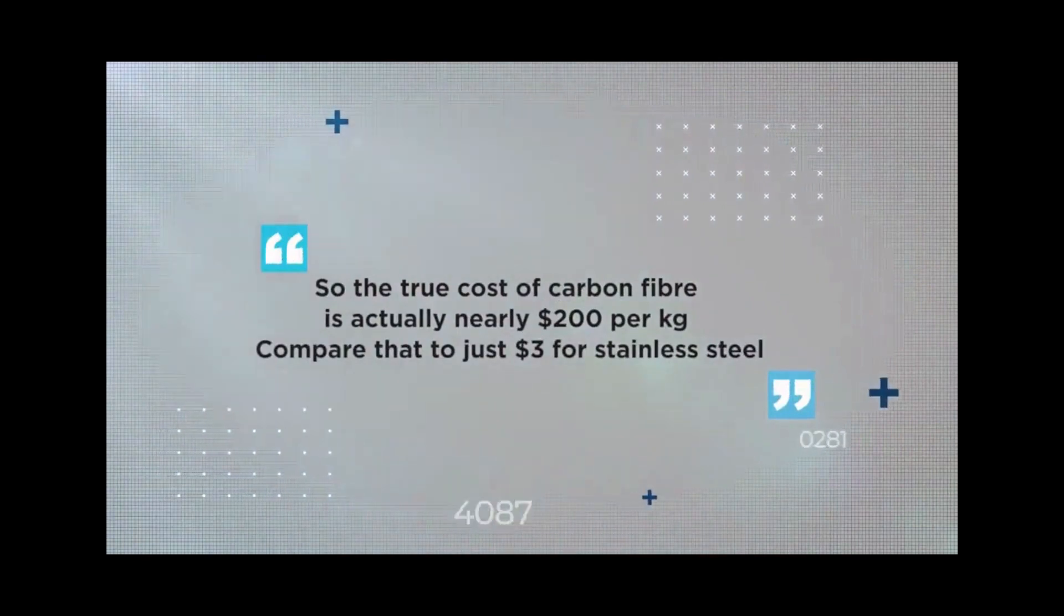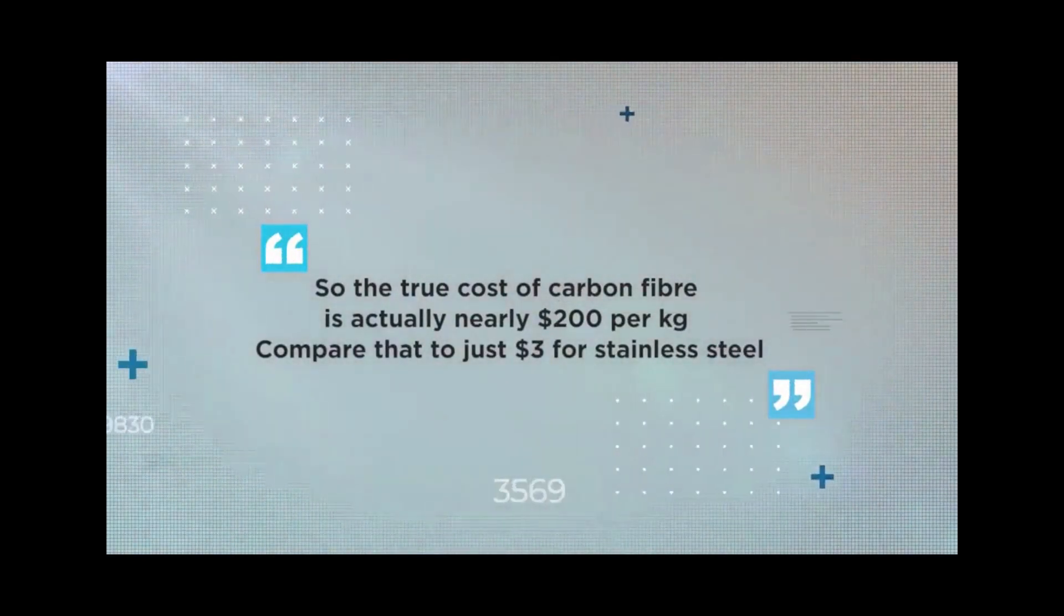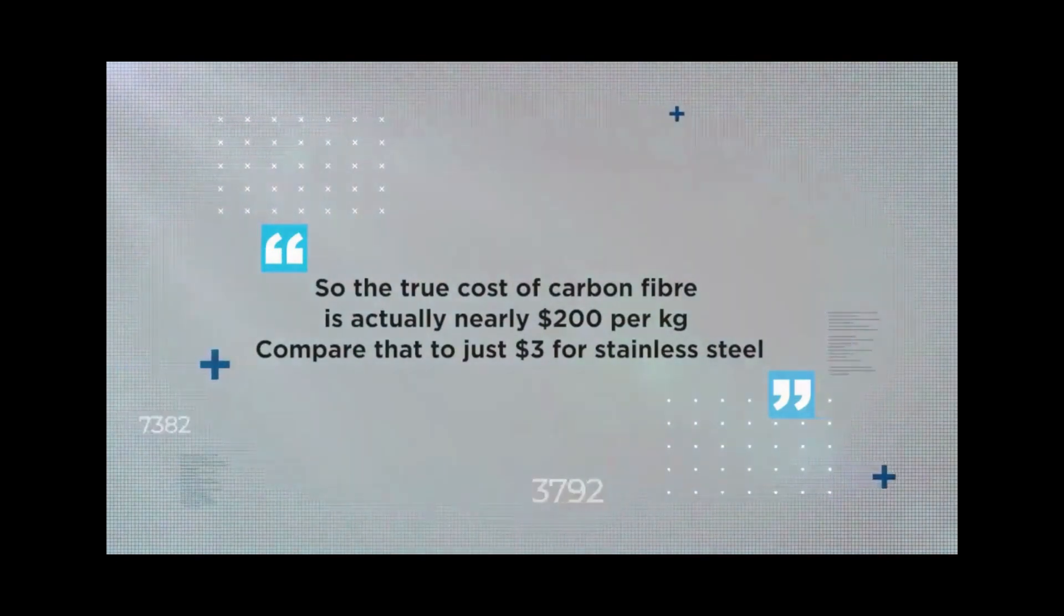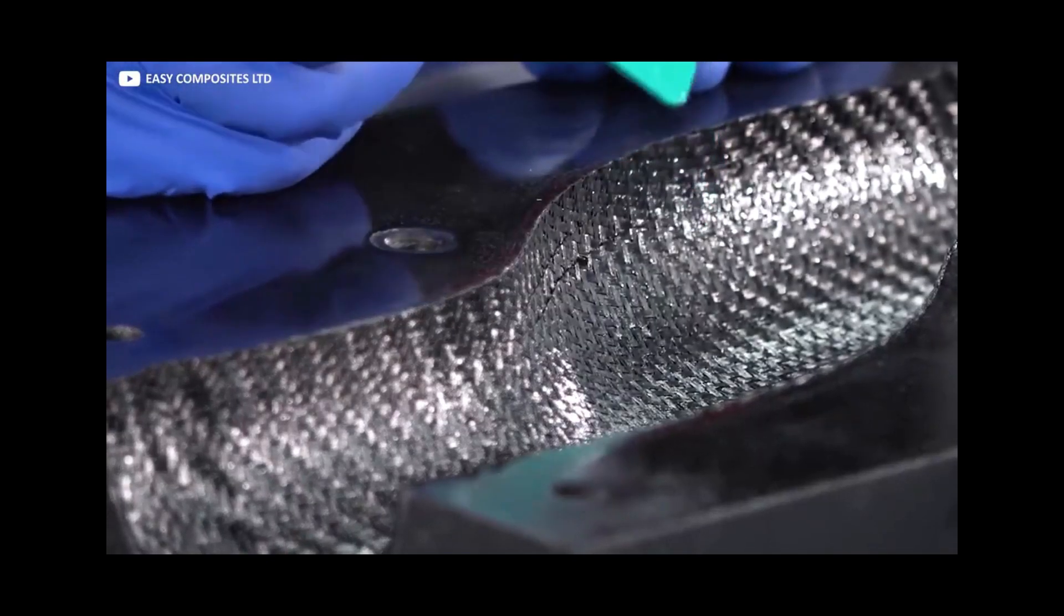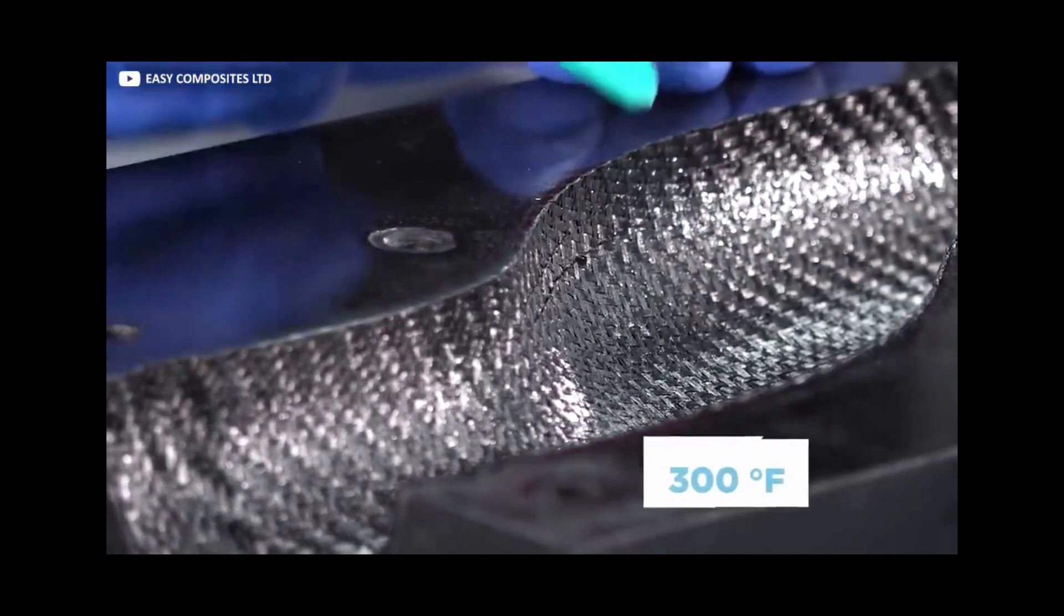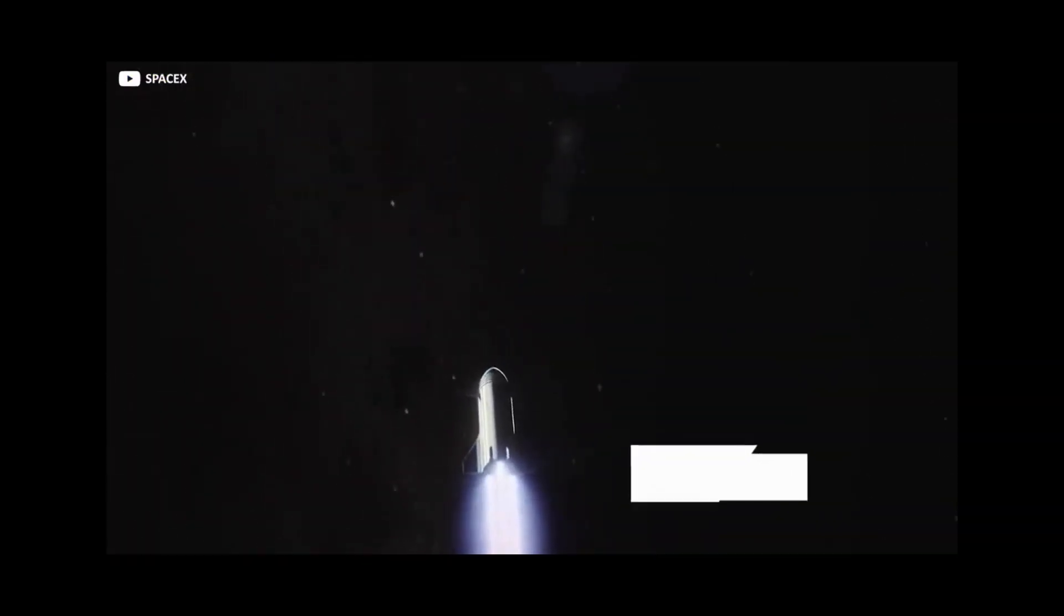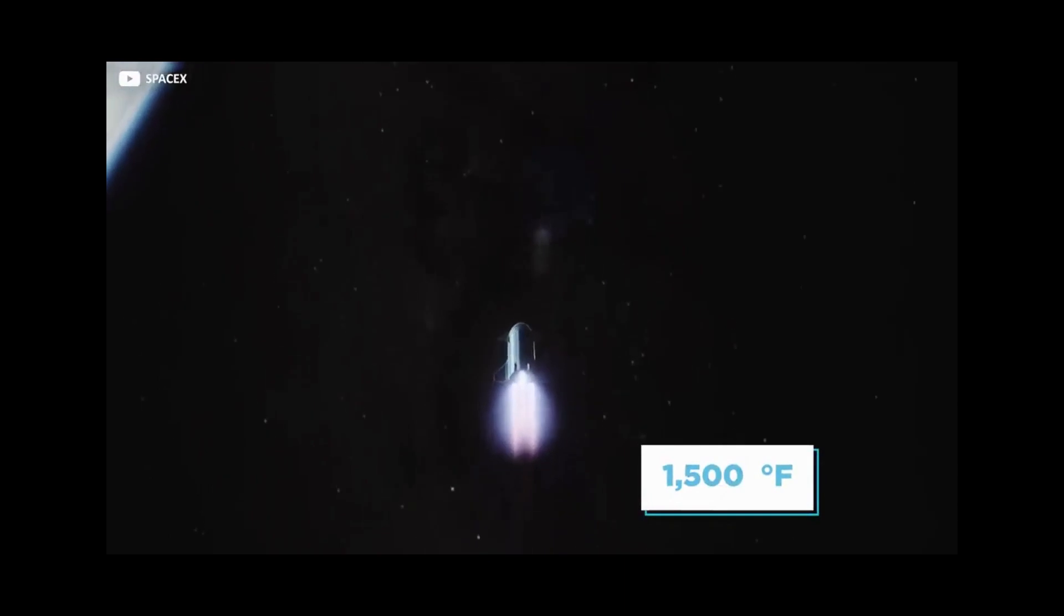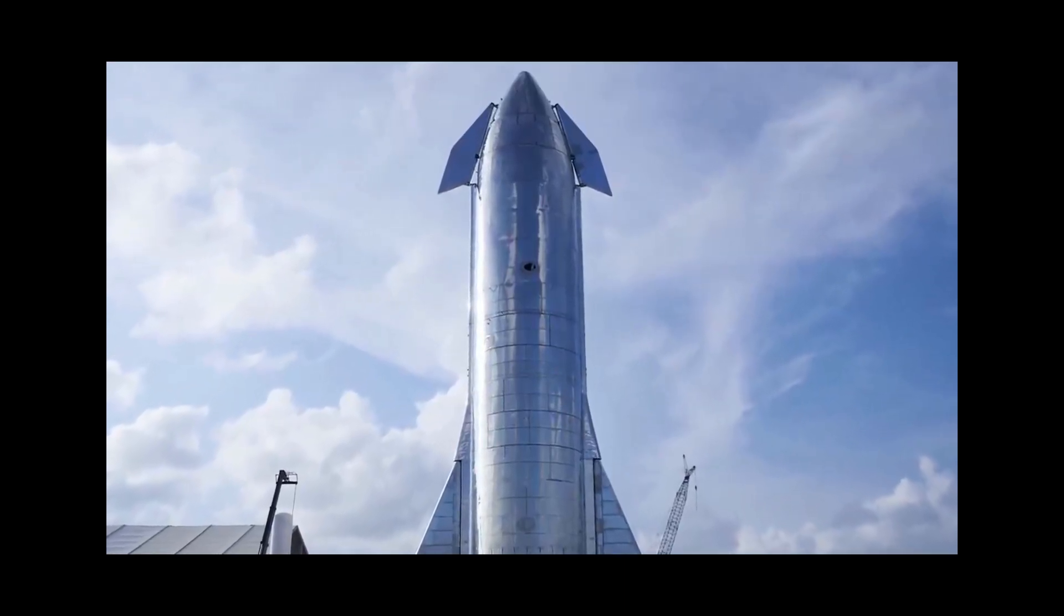Expense is another factor. Carbon fiber, a more conventional rocket building material, costs about $135 per kilogram, but around a third of carbon fiber ordered from the manufacturing needs to be scrapped when waste is taken into account after being cut to the precise size and shape needed to make a spaceship. So the true cost of carbon fiber is actually nearly $200 per kilogram, explained Business Insider. Compare that to just $3 for stainless steel.